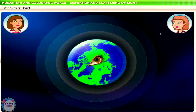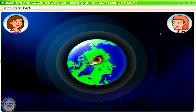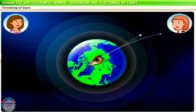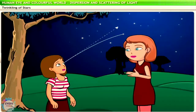Since our atmosphere is heterogeneous — that is, made up of many layers of various densities — the light reaching us from the sun or stars is refracted multiple times. As it crosses each medium, it refracts. Since these media, or the layers of air, are constantly moving, the angle of refraction of light is changing continuously. Therefore, we see the light from the stars flicker.